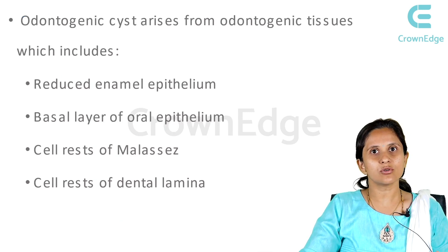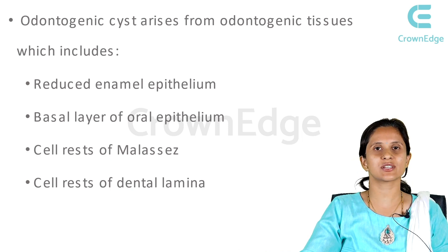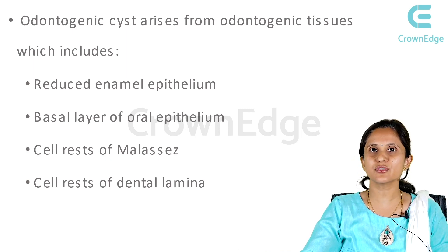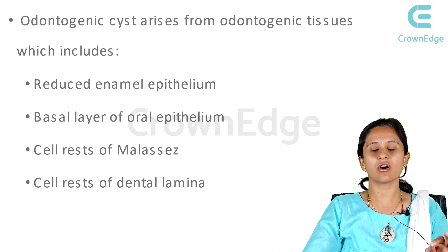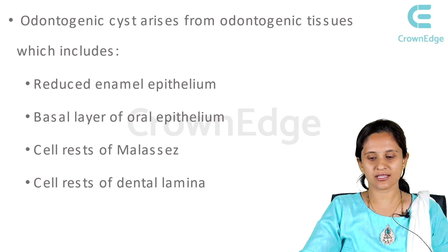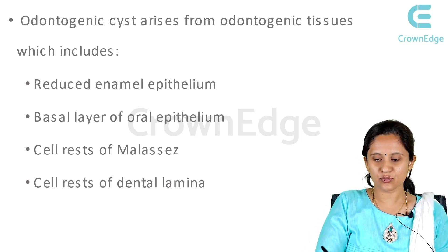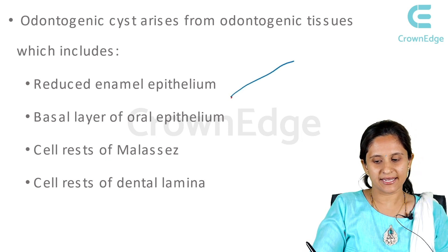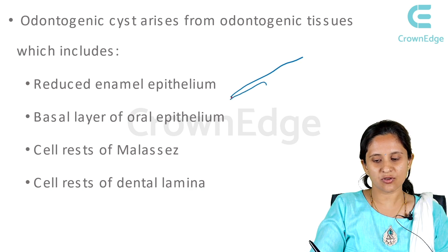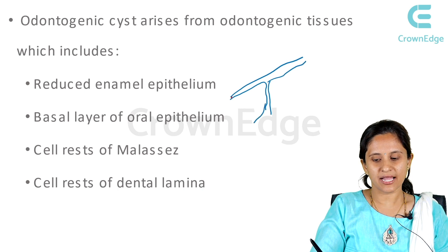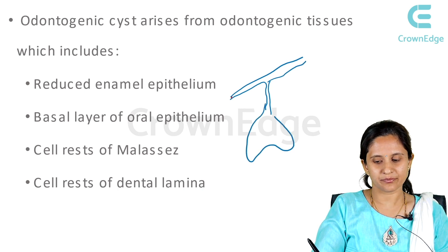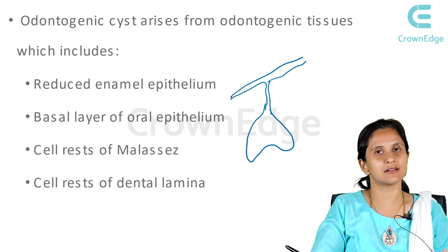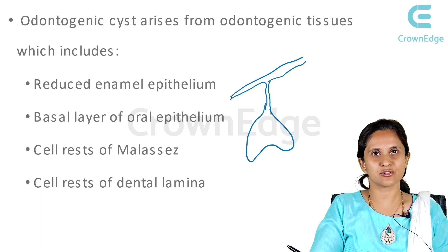What are odontogenic cysts? These are the cysts which are actually arising from the tissues which form the tooth — the odontogenic apparatus. If we remember tooth development, we know that there is the overlying epithelial lining, and with the projection of the dental lamina which extends down, the tooth bud actually starts to form — as we've learned in DADH classes during tooth development.